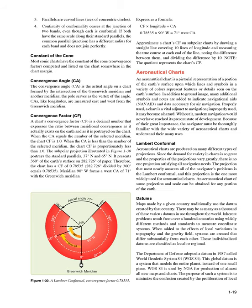Aeronautical Charts. An aeronautical chart is a pictorial representation of a portion of the Earth's surface upon which lines and symbols in a variety of colors represent features or details seen on the Earth's surface. In addition to ground imagery, many additional symbols and notes indicate navigational aids (NAVAIDs) and data necessary for air navigation. Properly used, a chart is a vital adjunct to navigation. Improperly used, it may become a hazard. Without it, modern navigation would never have reached its present state of development. The navigator must be thoroughly familiar with the wide variety of aeronautical charts and understand their many uses.